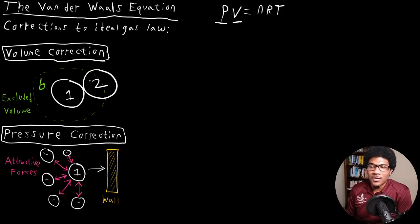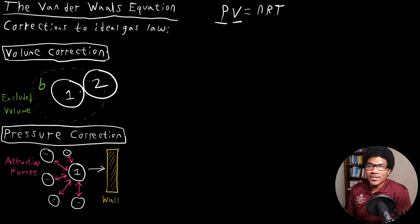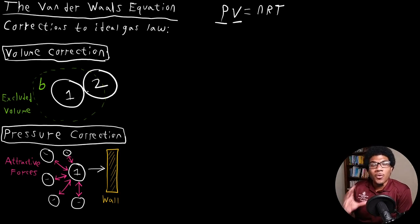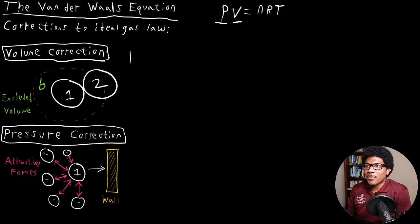The first correction we have to take into account is a volume correction. In this figure, we have two gas particles that are more or less colliding or interacting — Particle 1 and Particle 2. In the ideal gas equation, since we use the total volume as V, we're not accounting for the fact that when this collision happens, this particle can't access the volume being taken up by the second particle. We're ignoring the space taken up by other gas particles. This may be okay when we have very few gas particles — a couple of gas particles sitting in a box — where the volume of the particles themselves is rather negligible.